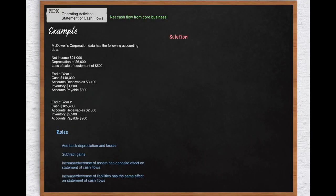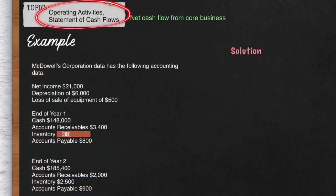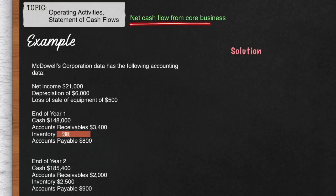Let's go over the Operating Activities section of the Statement of Cash Flows. The Operating Activities section deals with the net cash flow from the core business. Let's go over an example.